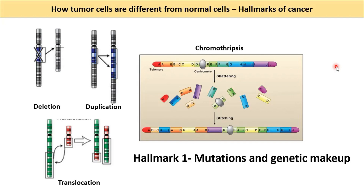First of all, cancer is a disease caused by mutations. The genome of tumor cells has a huge number of mutations including aneuploidy, deletions, translocations, amplifications and many more. The extent of the mutations is such that sometimes very large parts of the chromosomes are shattered completely and rejoined, restitched again in a completely random manner. This whole phenomenon is called chromothripsis.